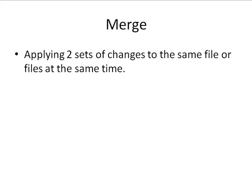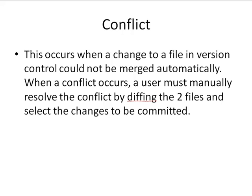When you do an update with your changes already in place, the version control system is going to try to take those two sets of changes and apply them to that same file. A lot of the times, as long as you're not working on the same exact spot of the file, the version control system is going to be able to merge those changes fine. However, if two people are working on the same spot of a particular file at the same time, that's when a conflict is going to happen. A conflict occurs when a change to a file in version control cannot be merged automatically.